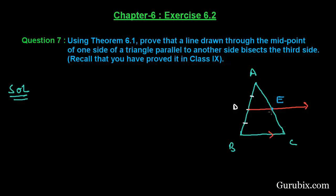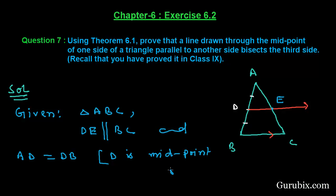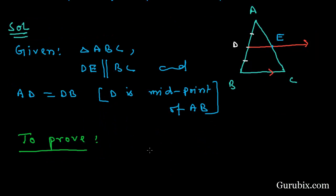Then we have to prove that AE equals EC. Let us see what is given to us. Given: triangle ABC, where DE is parallel to BC, and AD equals DB because D is the midpoint of AB. To prove: AE equals EC.